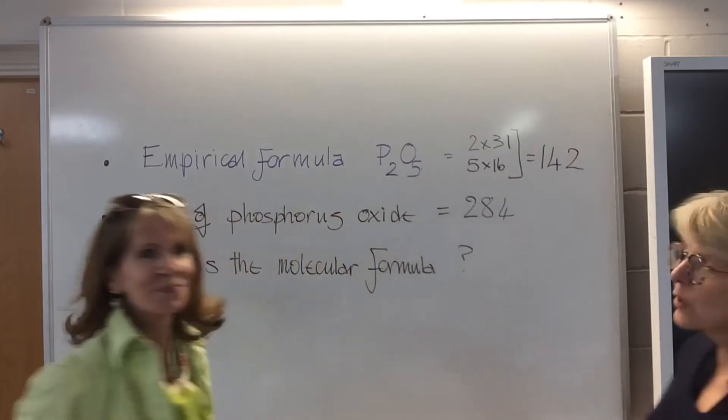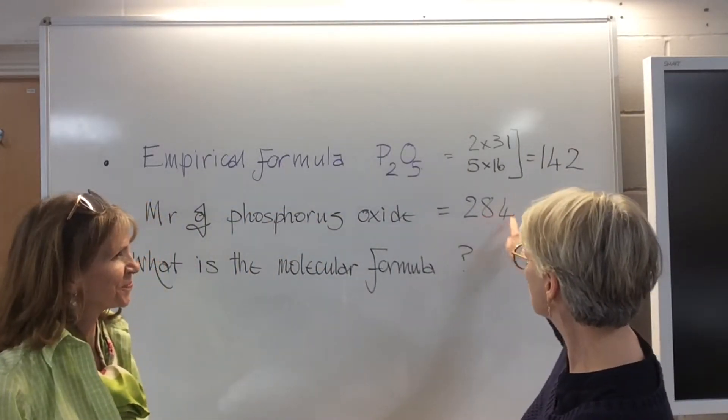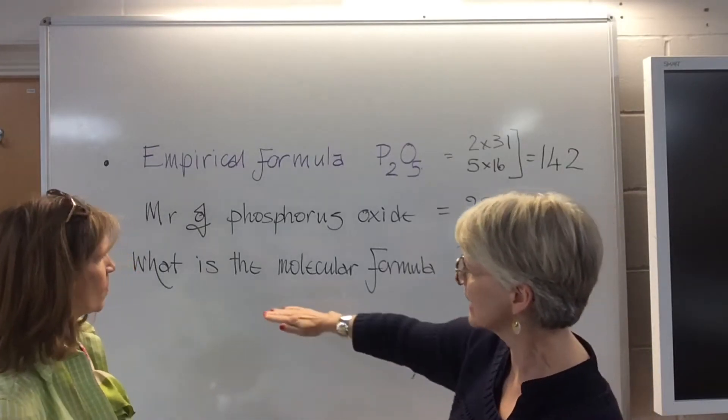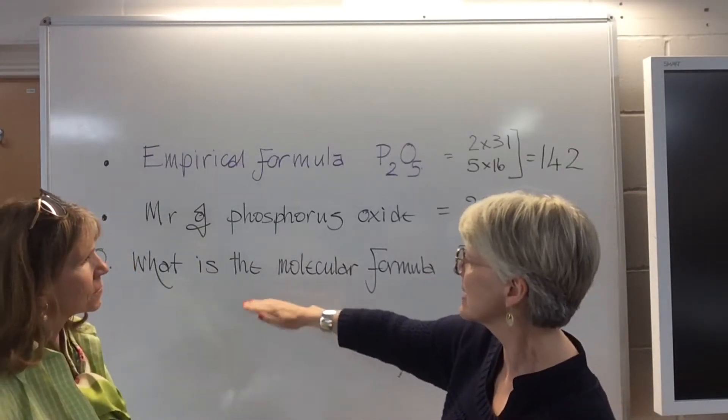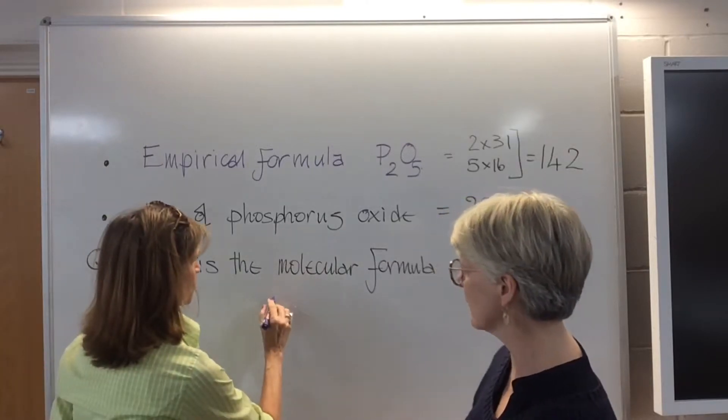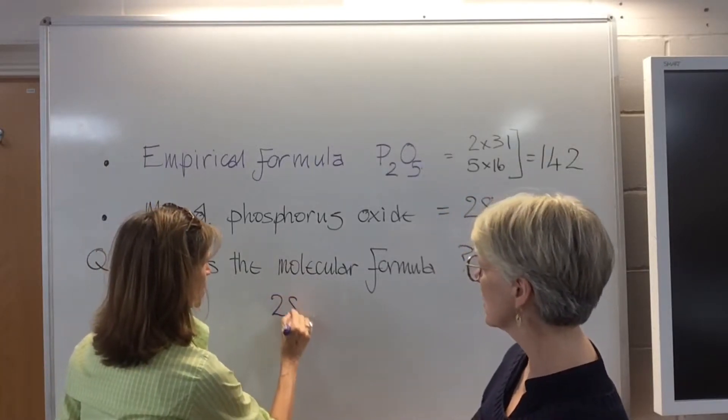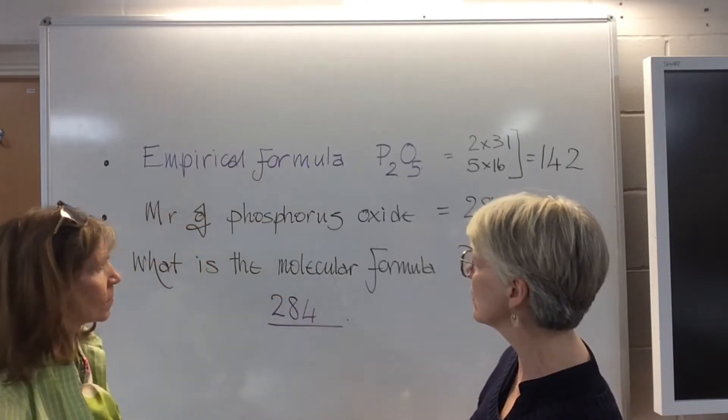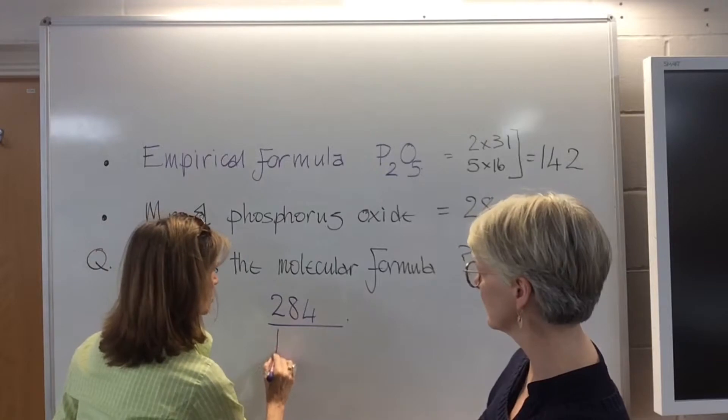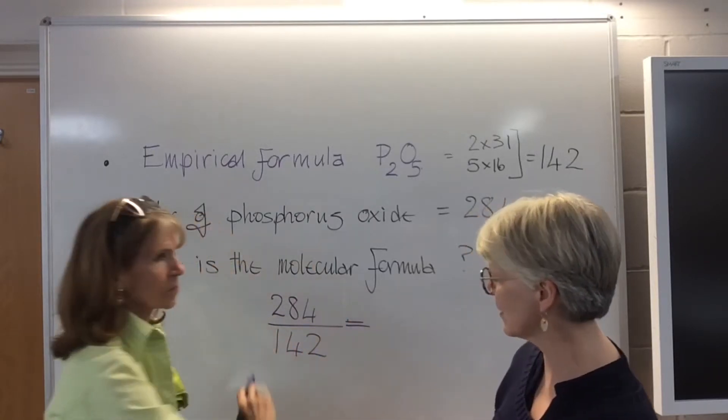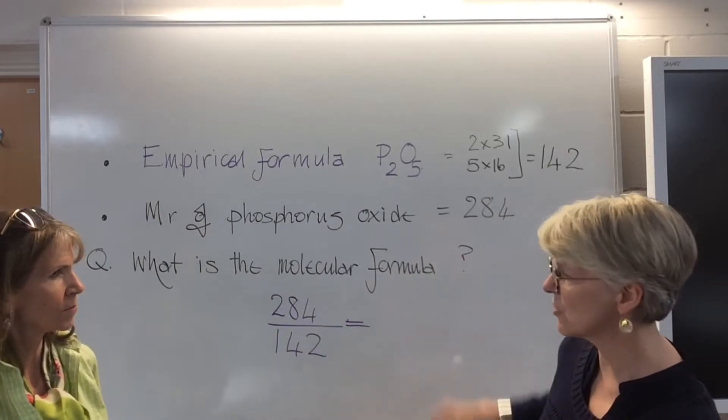Lovely. So, we've got the two numbers we need, 142 and 284. Now, this bit's simple, the little calculation that you do is the MR of the actual molecule on top, so that's the 284, divided by the MR of the empirical formula, which is 142. Now, I can see, but you can use a calculator, that the answer is 2.